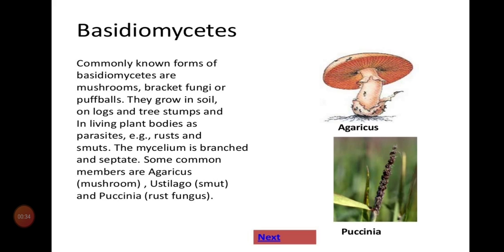In basidiomycetes, only 4 spores are produced, but not endogenously — they are produced exogenously. I have sent one picture for reference so you can compare the endogenous nature of the ascus and the exogenous nature of the basidiospores.